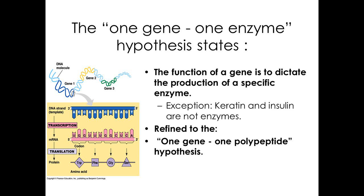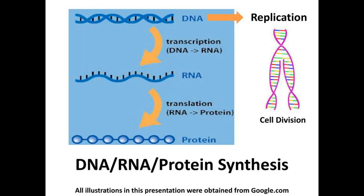There are, of course, genes that produce non-enzymatic proteins, and there are genes that produce the subunits of proteins. Sometimes one gene can produce different proteins. There are many exceptions, but let's first cover the basics of gene expression by using a gene that produces one protein as an example.